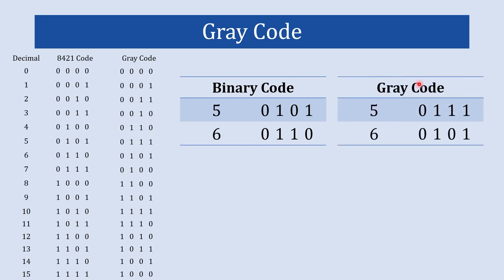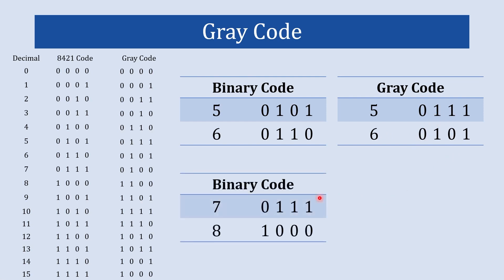Now we check for gray code: when we move from five to six, how many bits change? The LSB remains as it is, this bit changes, and the remaining two bits stay as they are. That means when we move to the next digit in gray code, there is only a change in one bit — the remaining three bits stay as they are.